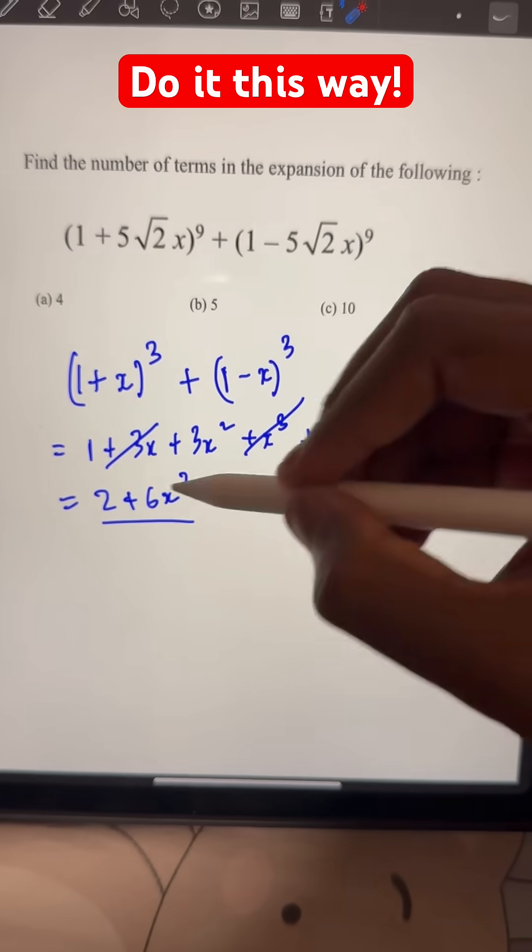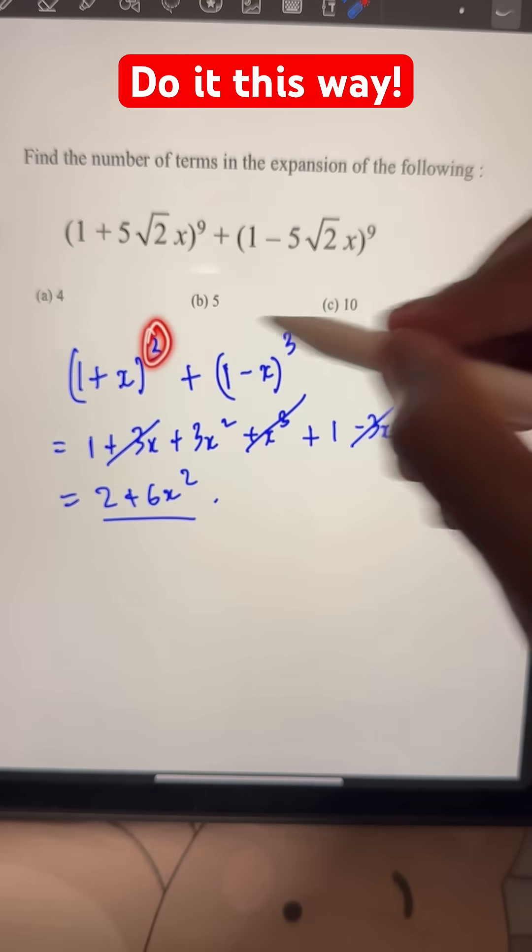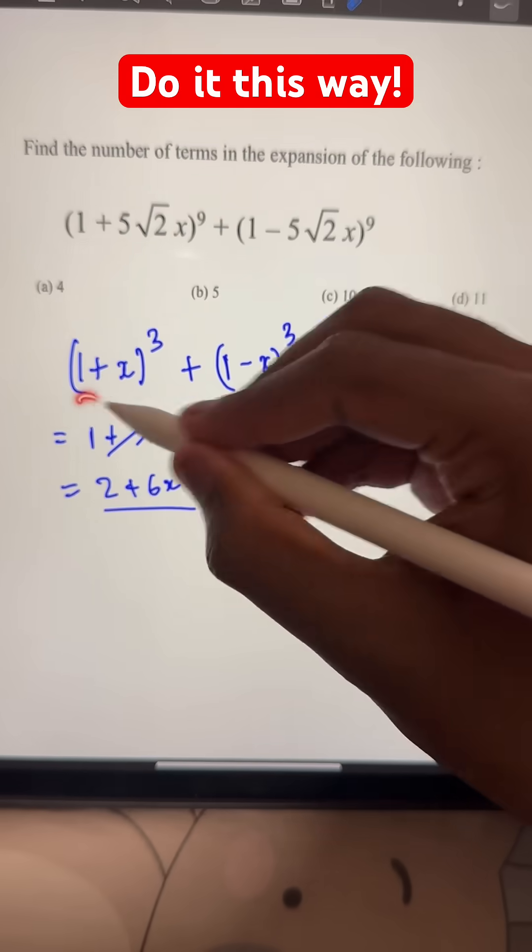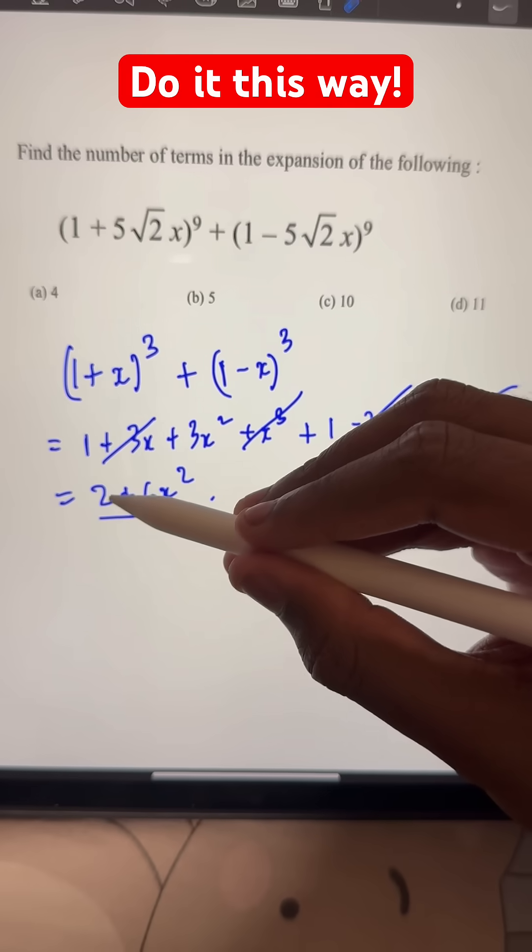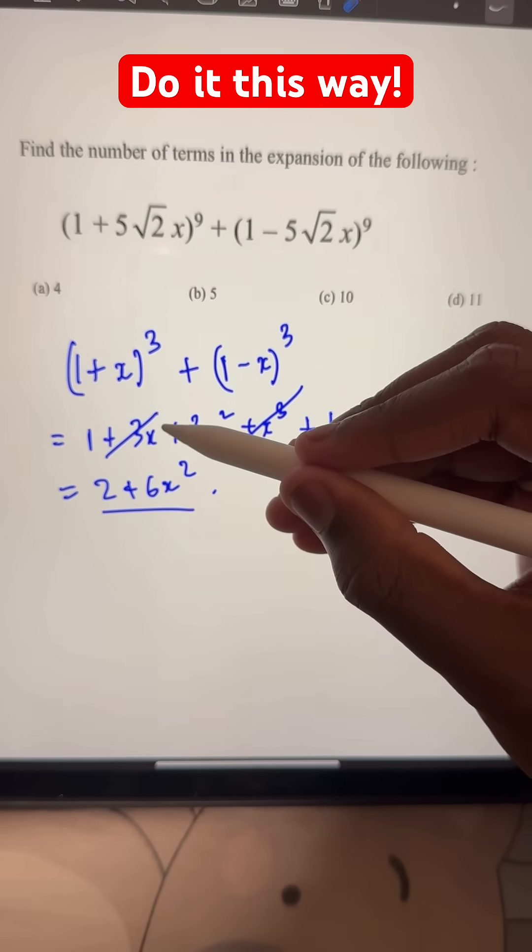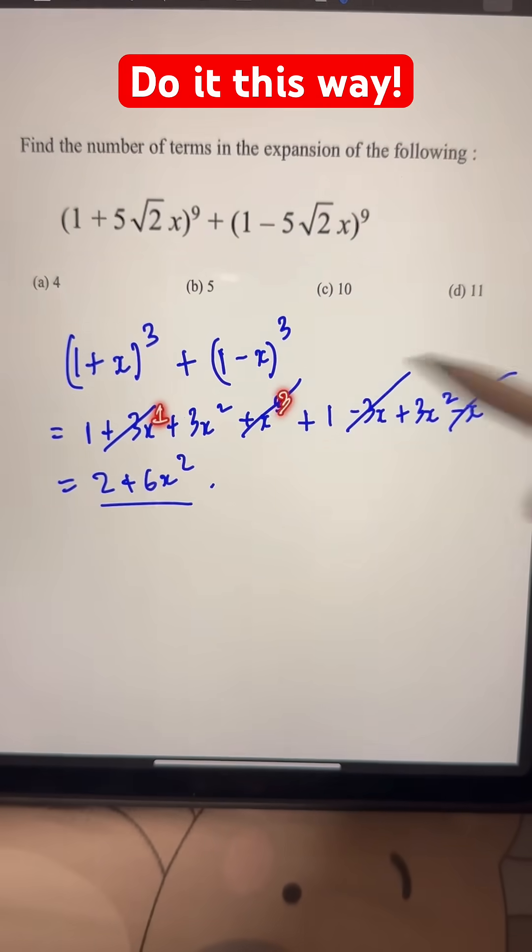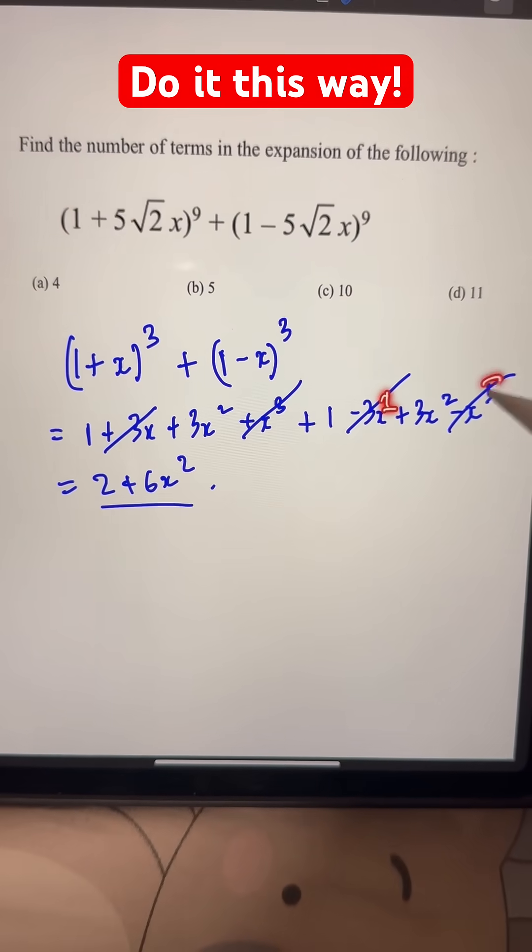This is 2 terms for exponent 3. We can cancel out all the odd terms and have only the even terms. What do I mean by odd and even? The exponent of x is odd in those which cancel.